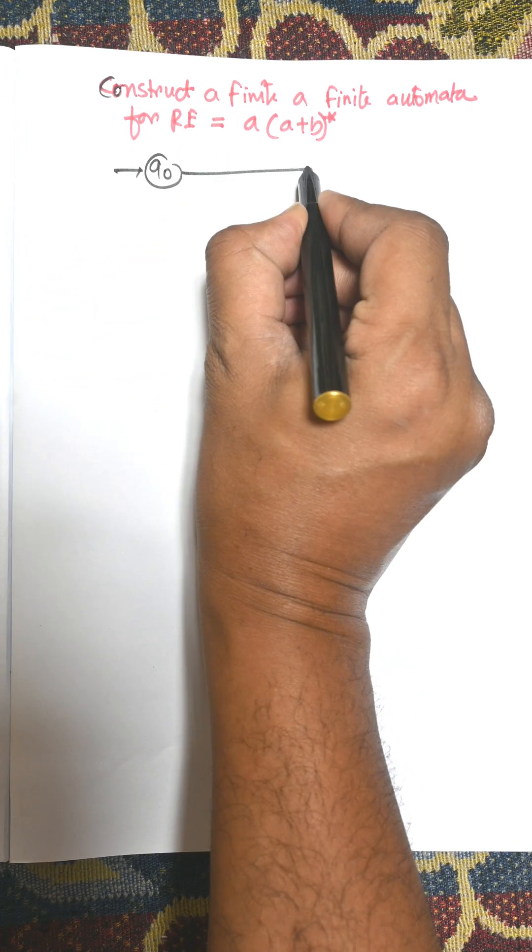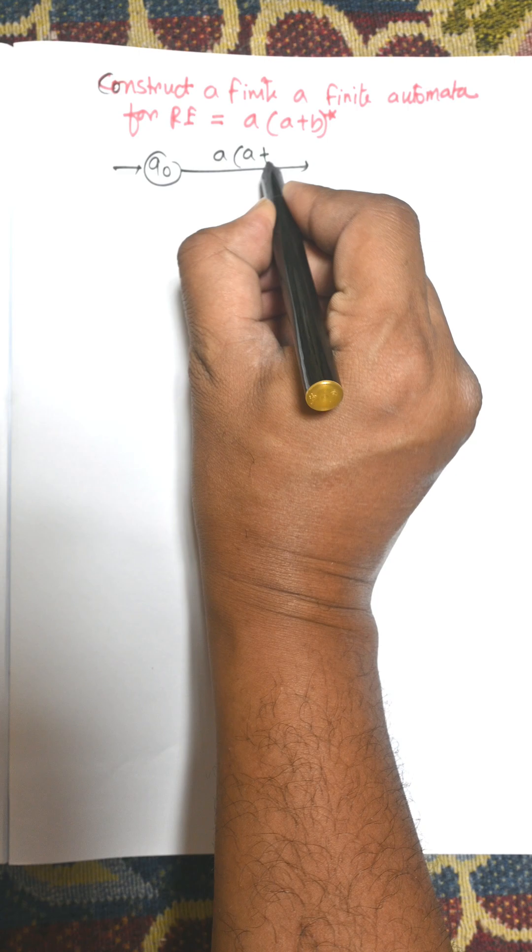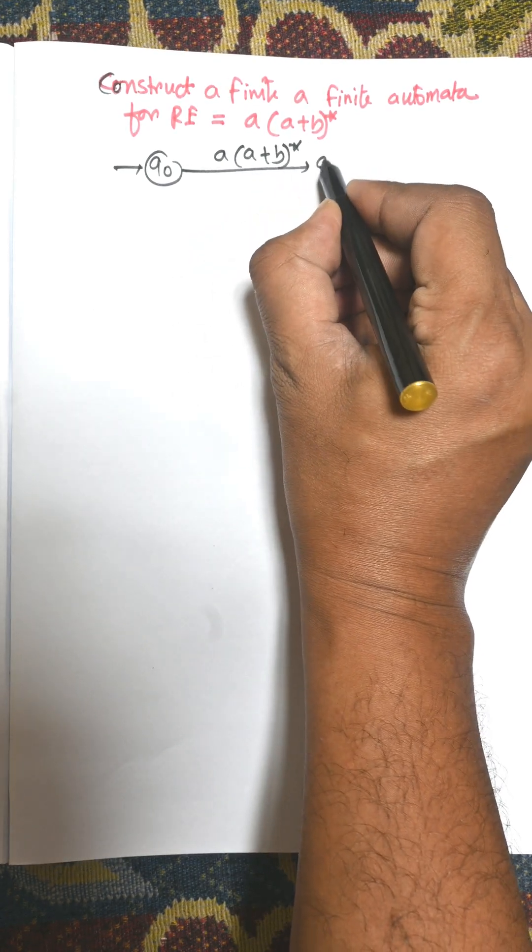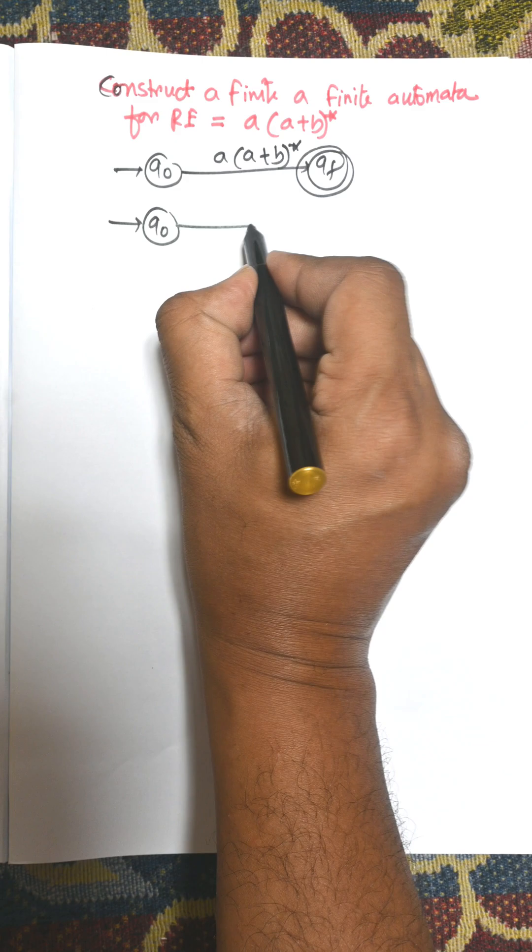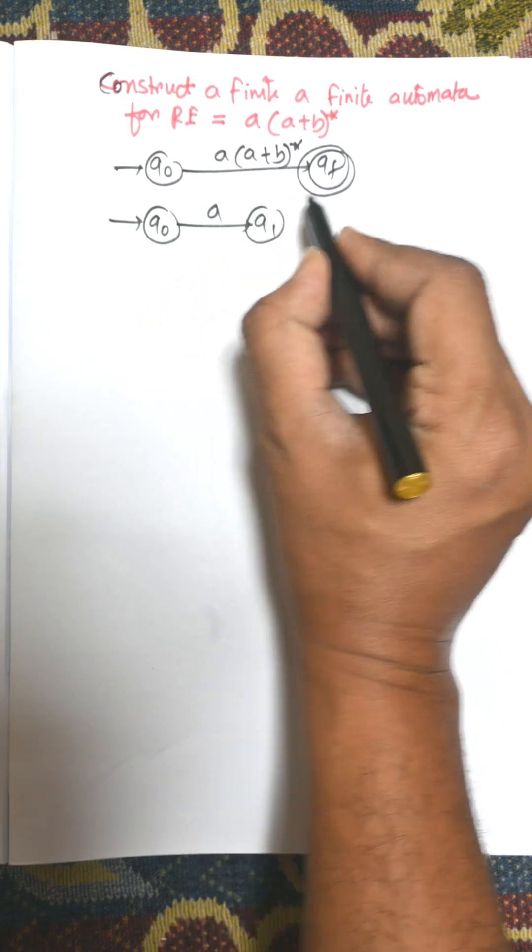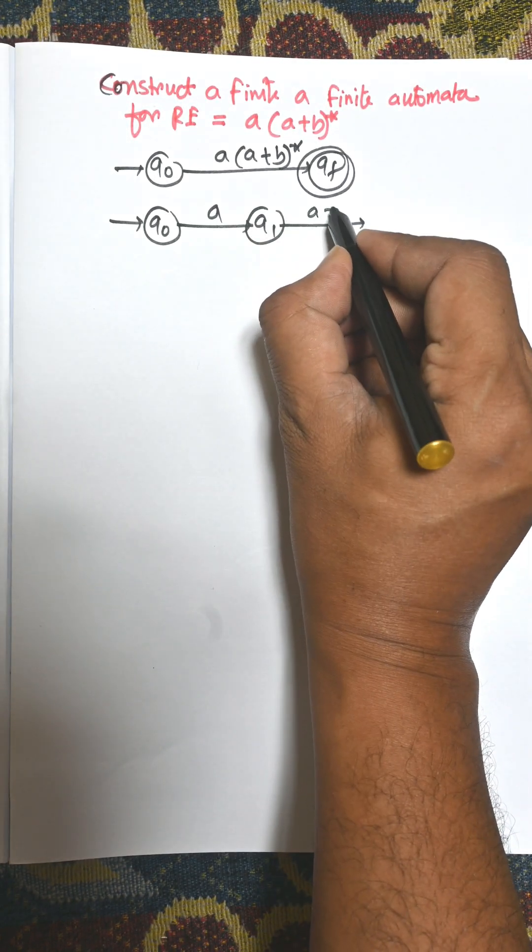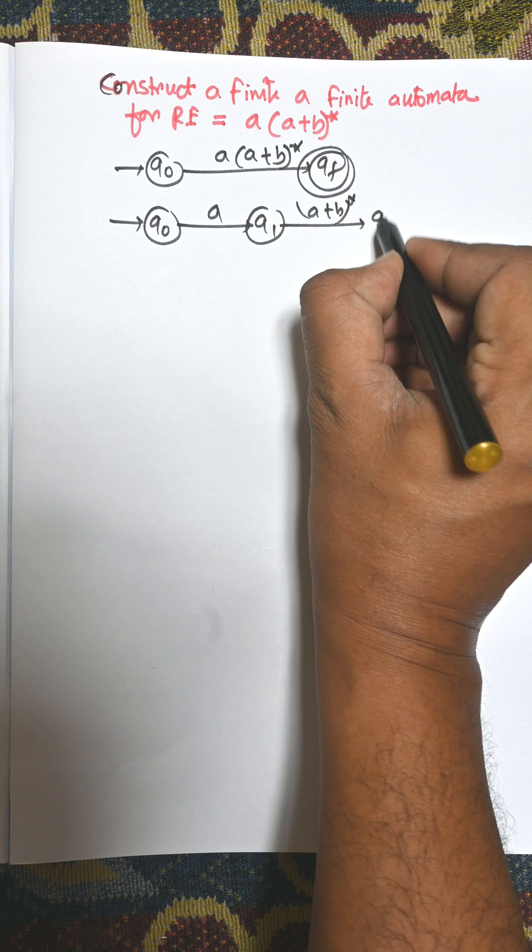Q0 is the initial state, consider a as an input and it goes to final state. Now for A to Q1 and for AB star it goes to final state Qf.